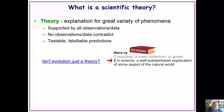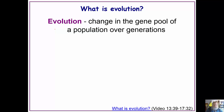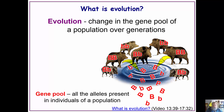Evolution is a theory, but it's been around for so long and there have been so many ways to prove it that it just works. Basically, evolution is the changing of the gene pool of a population over several generations.